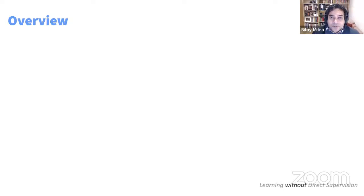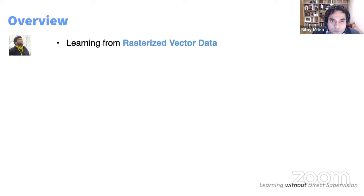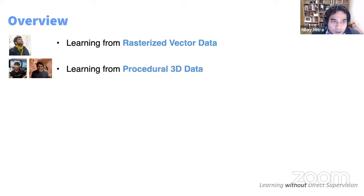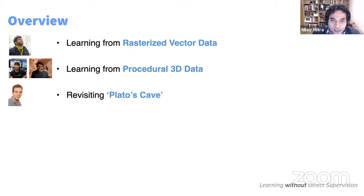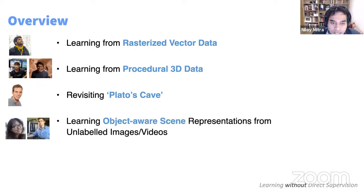Today's talk covers four sub-areas with the same theme. First, how do we work with vector data when we have access only to raster data — outputting SVG from raster input. Second, how can we regularize a problem by having procedural 3D data. Third, what if we have only image examples and no 3D objects. Fourth, object diversity, compositionality, and how we move forward.